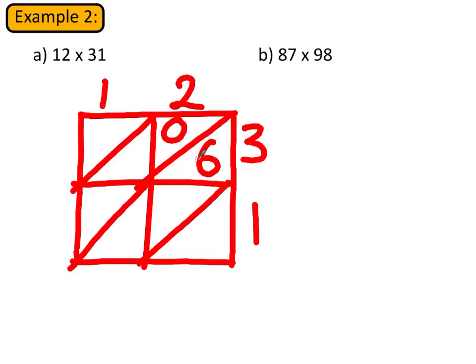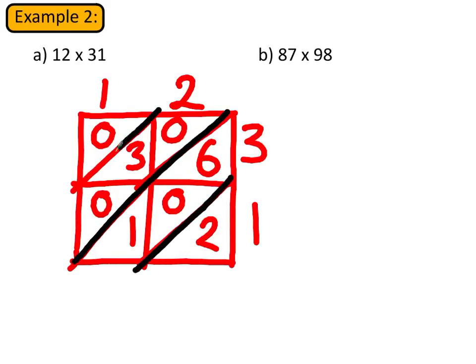First of all we're going to do 2 times 3 which is 6, and we write that here like that. Now the bottom half of the box is for your units, your top half of the box is for your tens. So 2 times 3 is 6, I've written 06. 2 times 1 is 2, 1 times 3 is 3, and 1 times 1 is of course 1. So that's the first part. Now once you've done that we're going to start to add in a diagonal sense.